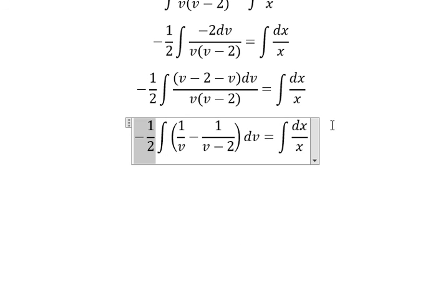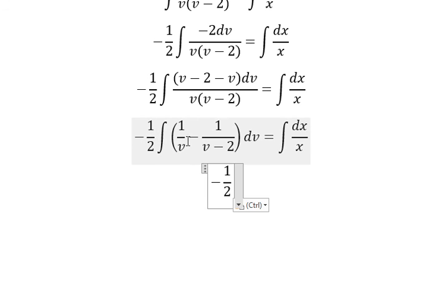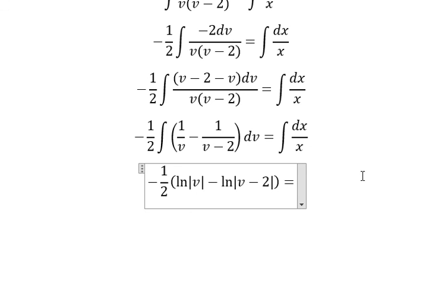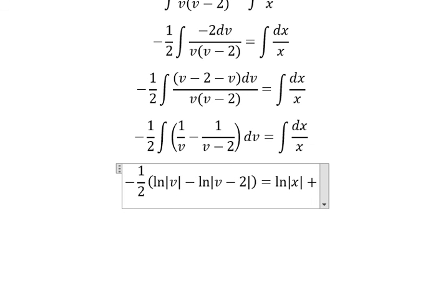And now the integration of 1 over v, you got ln of the absolute value of v. The integration of this one, you got ln of the absolute value of v minus 2. And this one, you got ln of the absolute value of x, and we put C.